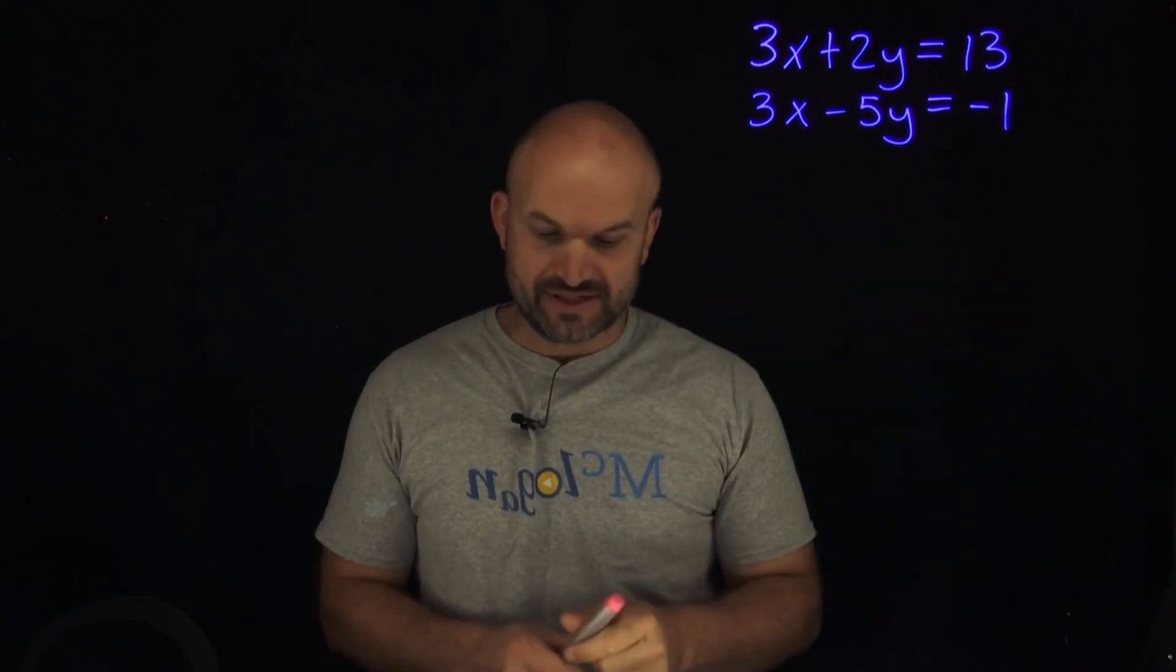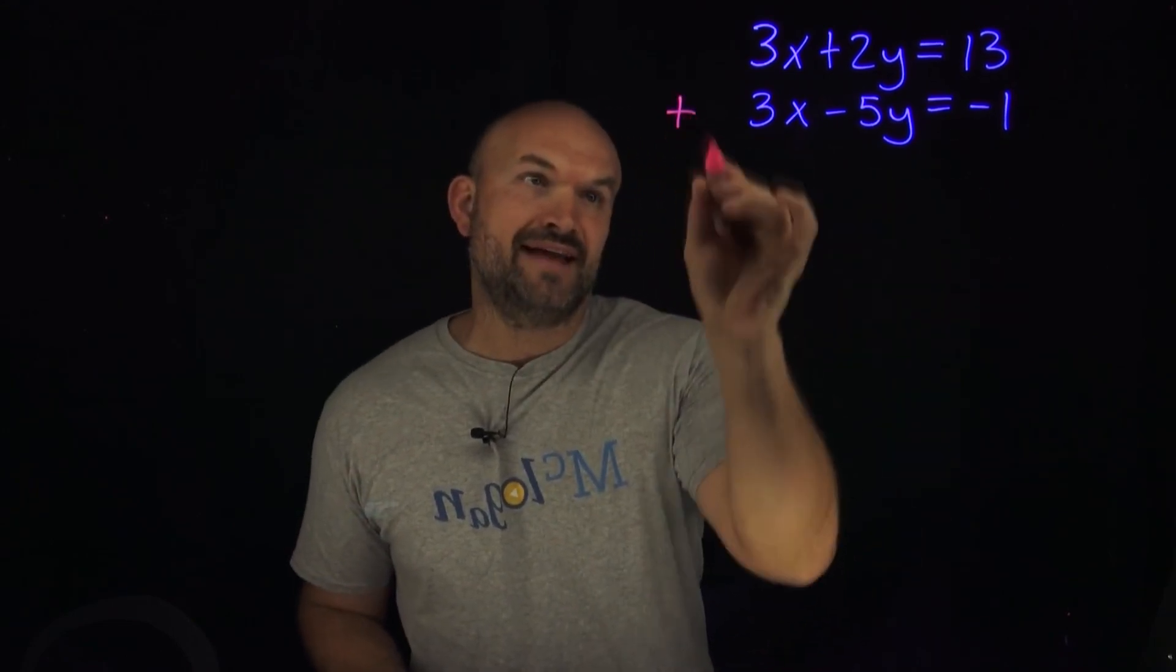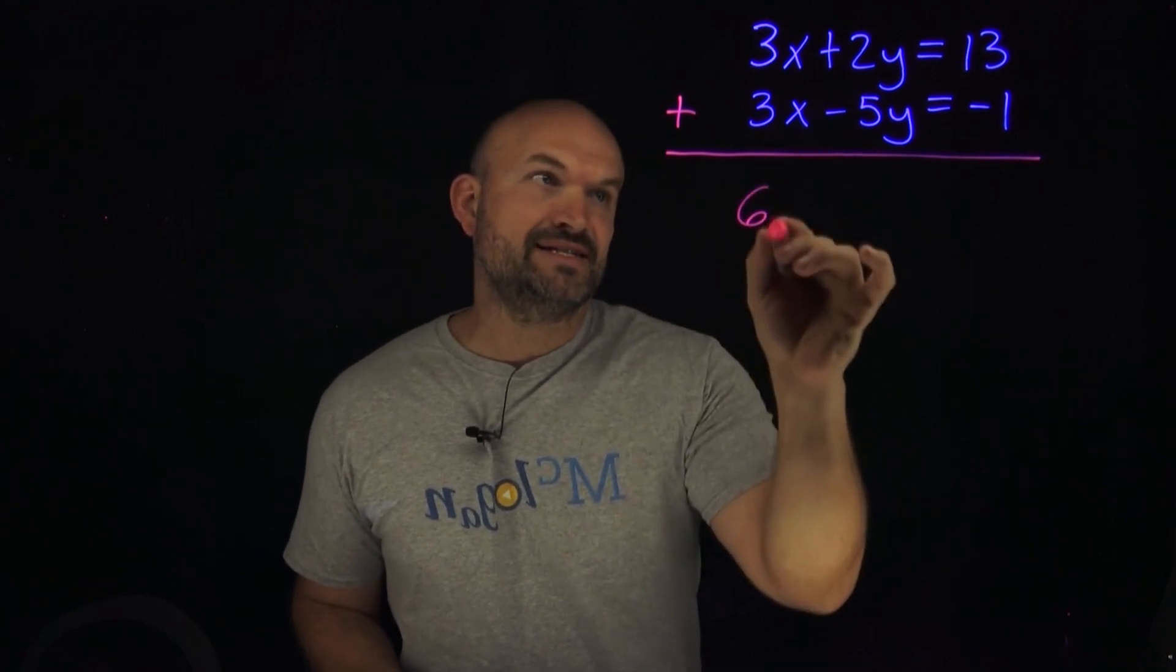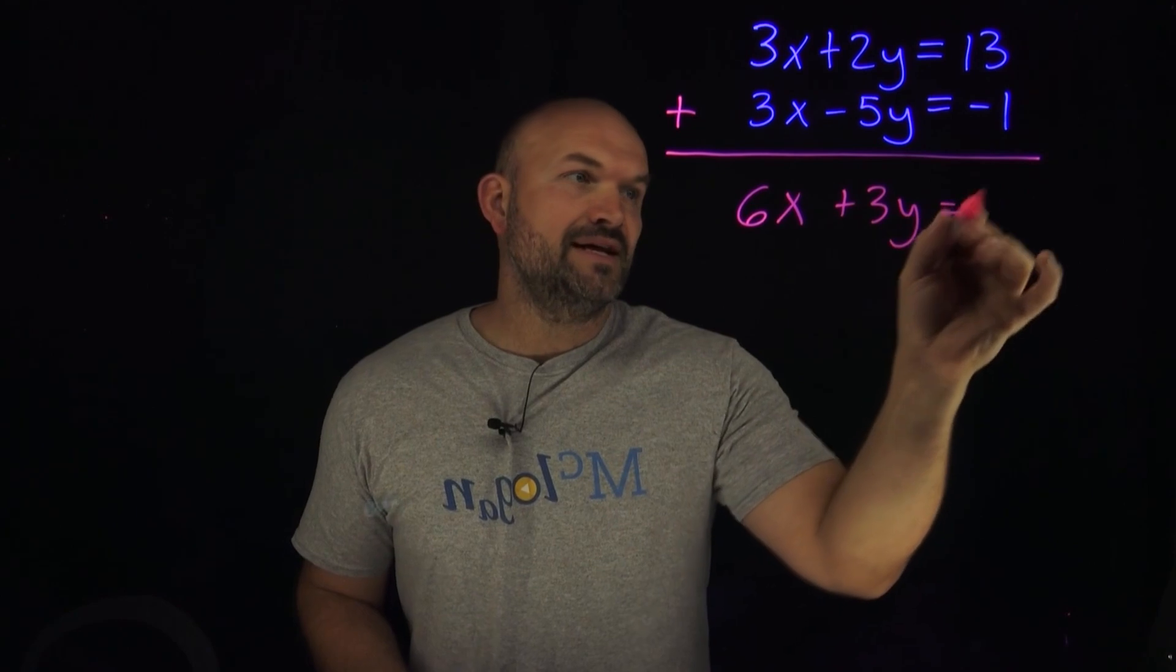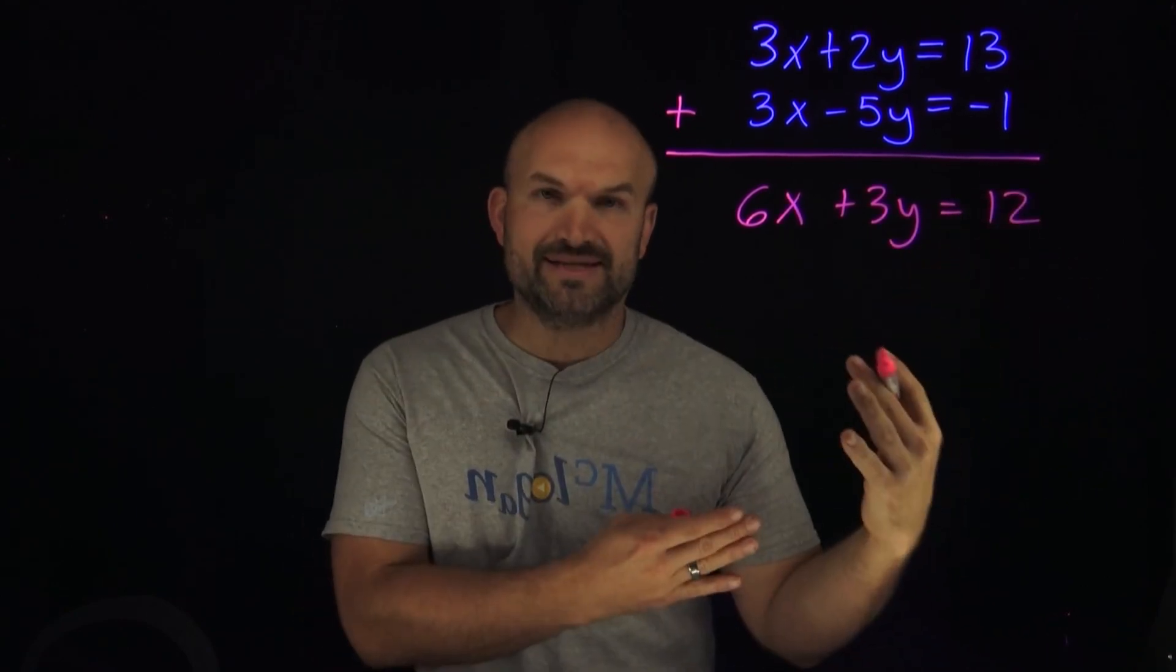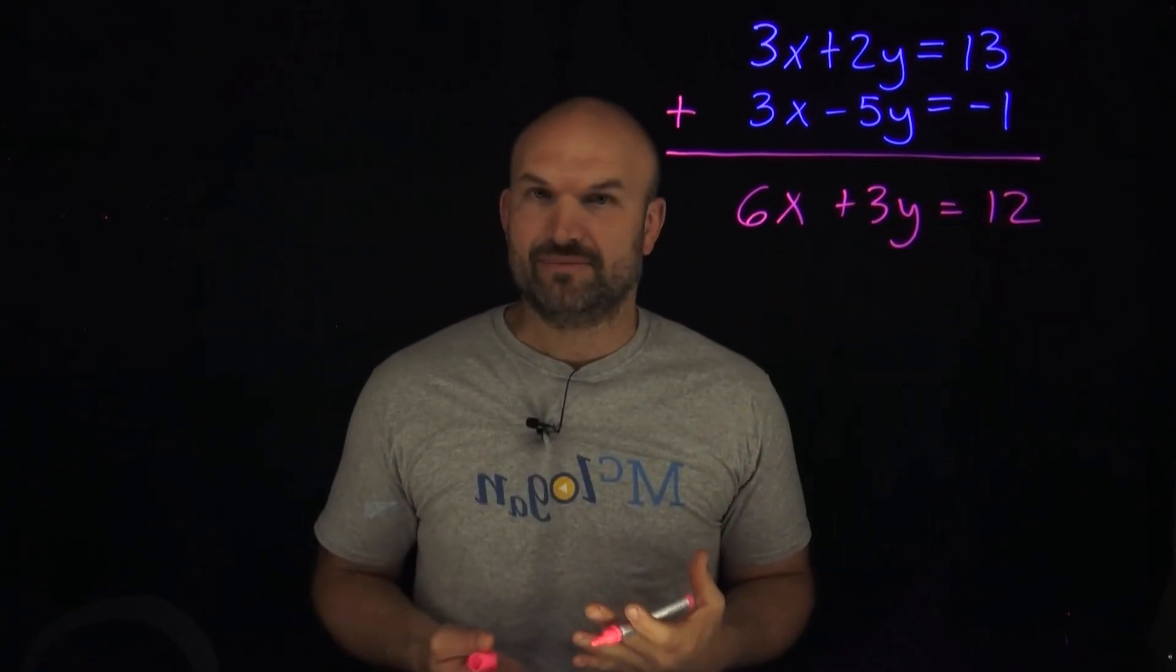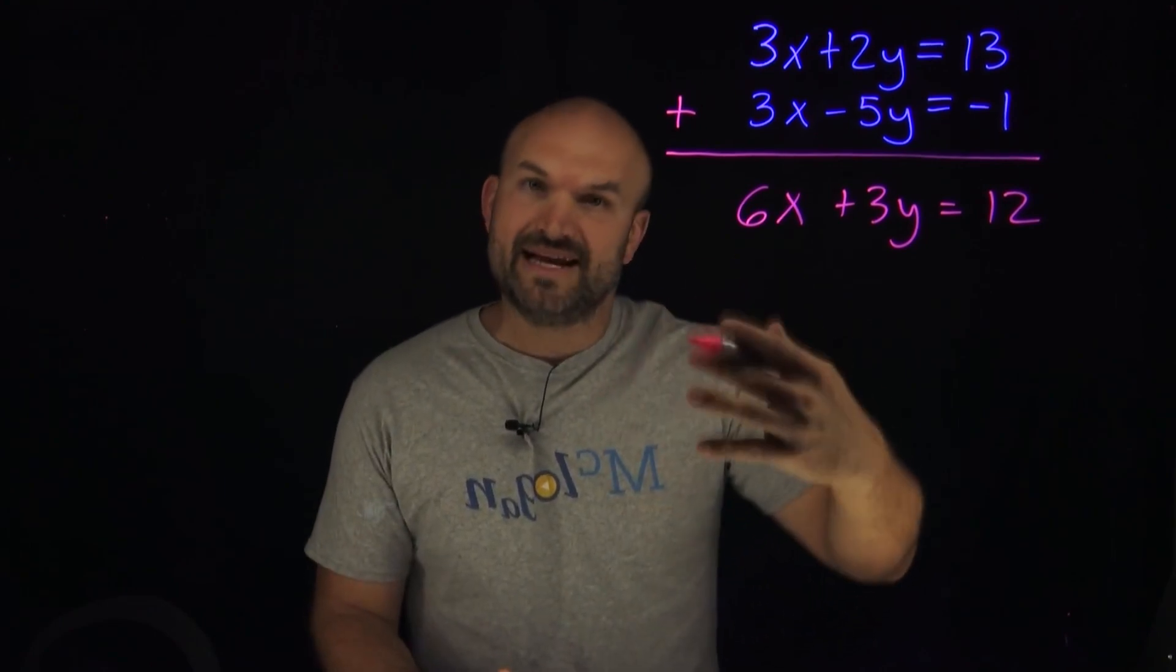Now we don't want to add the two systems right away because if we were just to go ahead and add these together right now, what we would get here is 6x plus 3y equals 12. So the problem with this is that's not eliminating a variable. Our goal is to eliminate one of these variables.